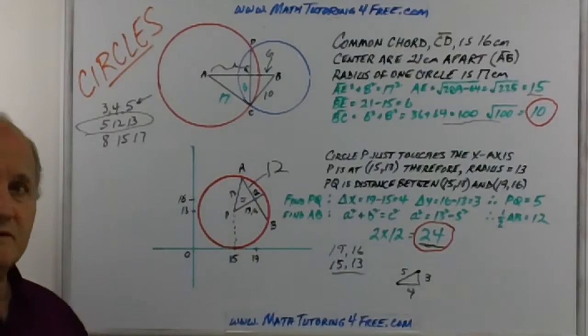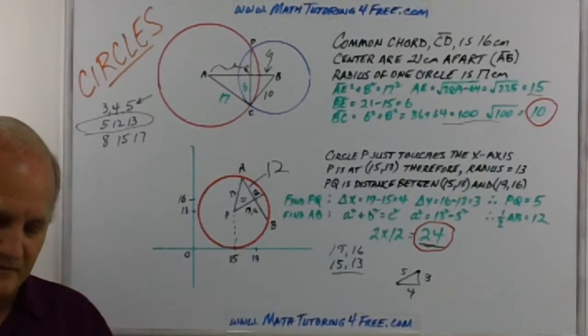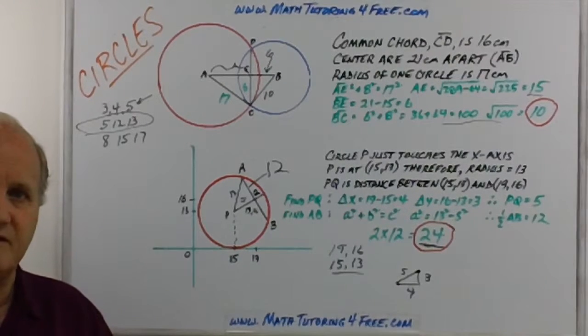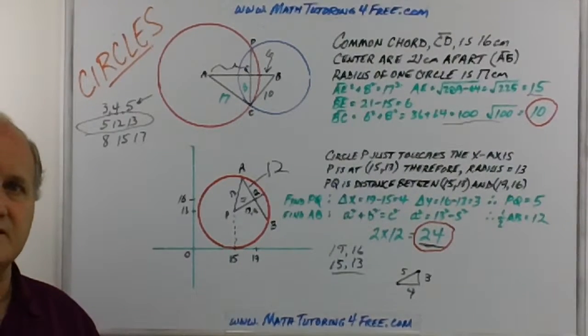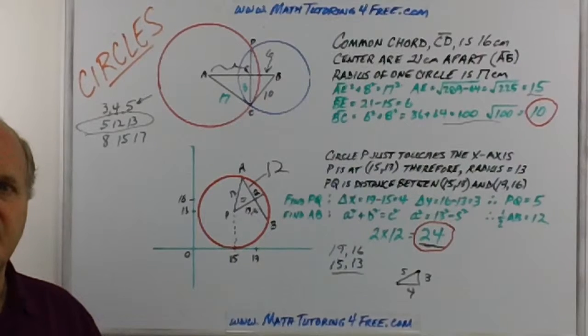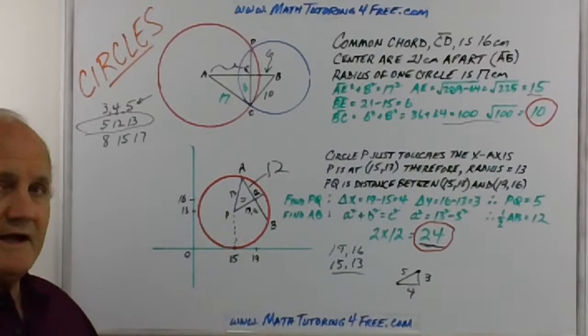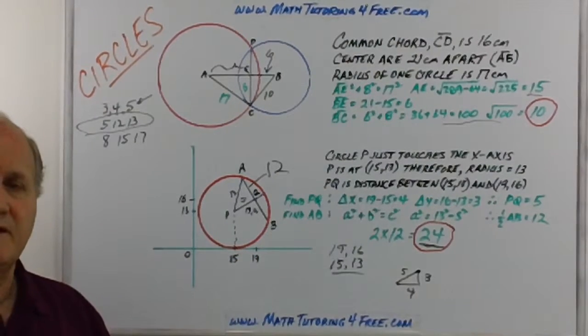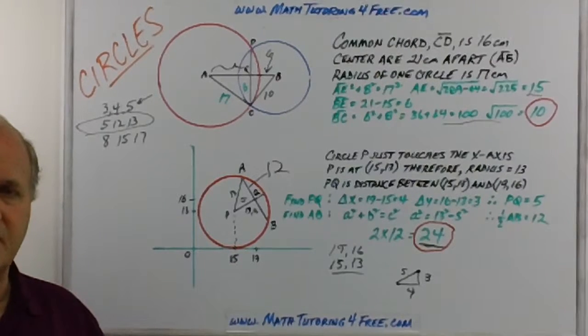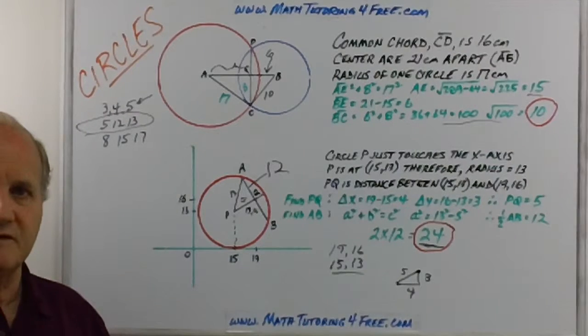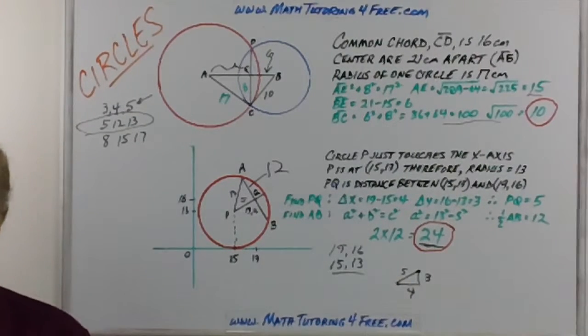So those are two more difficult problems than we've dealt with before, but I'll guarantee you that's the kind of thing you're going to have. If you don't have it on your chapter test, you're probably going to have it on an SAT exam later on. Hopefully, again, you remember those radii that are perpendicular to the chord bisect that chord, and those will help give you the legs of those right triangles. Thank you.